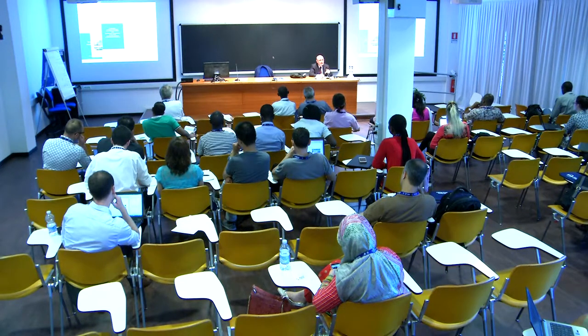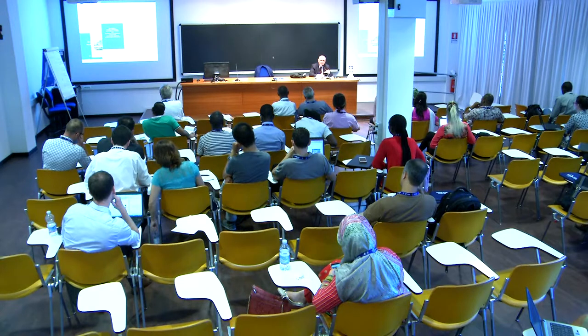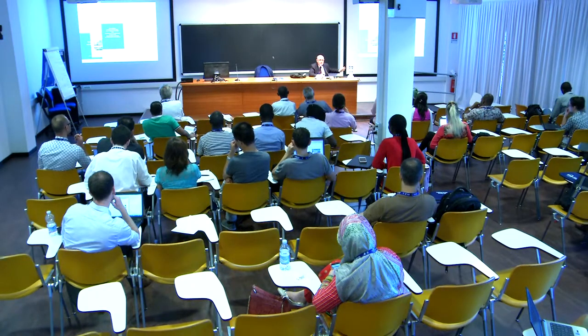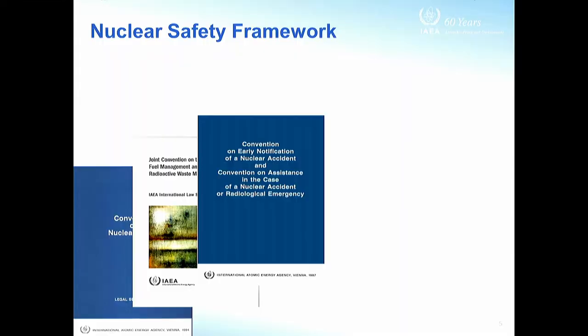Each of these has been adopted to regulate a different area of nuclear safety. Even the Convention on Nuclear Safety, which has a very general title, in fact only applies to the safety of nuclear power plants — a very specific, though very important, aspect of nuclear safety. Other aspects are regulated by the Joint Convention, the Convention on Early Notification, or the Convention on Assistance.